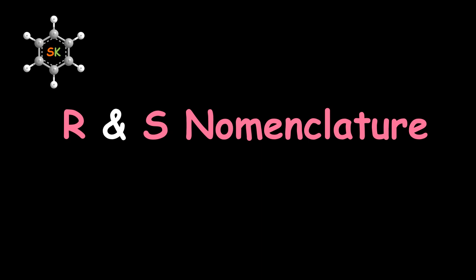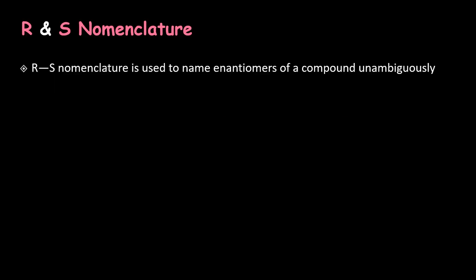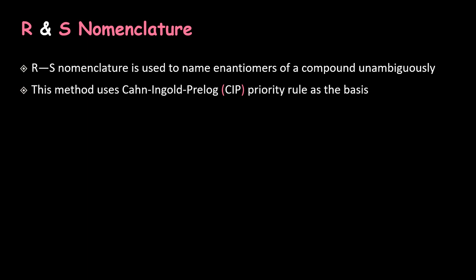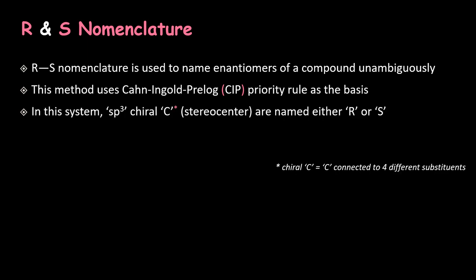R and S nomenclature is used to name enantiomers of a compound unambiguously. This method uses the Kahn-Ingold-Prelog priority rules as the basis, which in short is called the CIP rule. In this system, sp3 chiral carbons of a molecule are named either R or S.